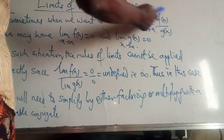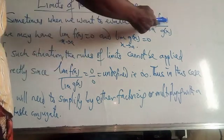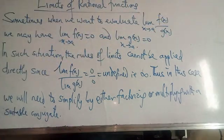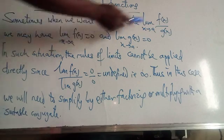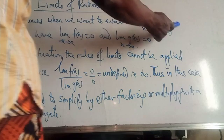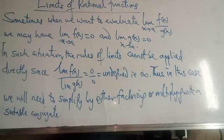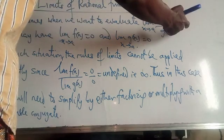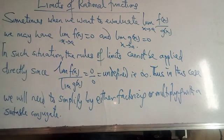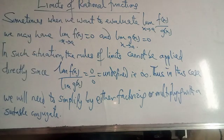Sometimes, when we want to evaluate functions that are rational — like the limit of f(x) over g(x) as x tends to a — we may find that the limit of f(x) is 0 and the limit of g(x) is 0. We may obtain 0 as numerator and 0 as denominator. If that happens, it will be difficult for us to apply the limit rules directly, because there is no way we have 0 over 0 and say the limit exists. What we need to do is apply methods like factorization or multiplying by a suitable conjugate to solve such a problem.